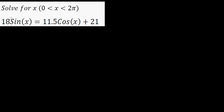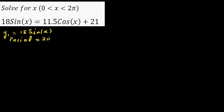Let me explain this graphically. Suppose y1 = 18 sin x. From this, the maximum is 18, the minimum is minus 18, and the baseline is zero — so it oscillates between minus 18 and plus 18. The period is 2π, so for a period of 2π you have a maximum of 18 and a minimum of minus 18.